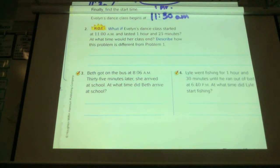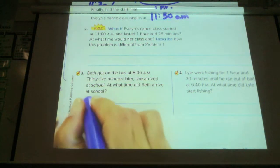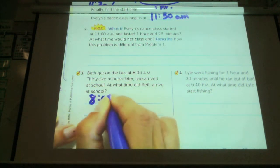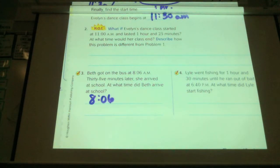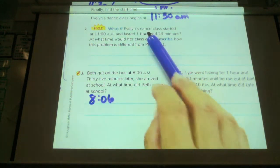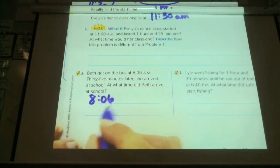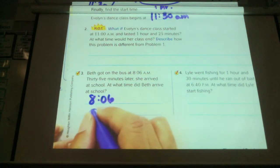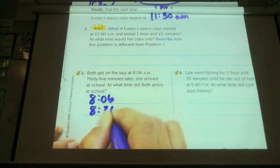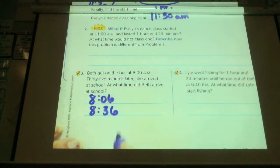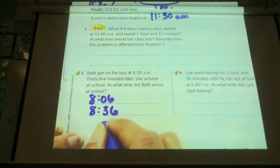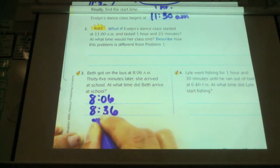Beth got on the bus at 8:06 AM. 35 minutes later, she arrived at school. What time did she arrive at school? So she starts at 8:06. 35 minutes later, am I going to be adding those minutes or subtracting those minutes? Okay, we're going to add those minutes. So I know 8:06 plus 30 minutes would be 8:36. And now I have to put the extra five minutes. So 36 plus 5 is 41. So it's 8:41.